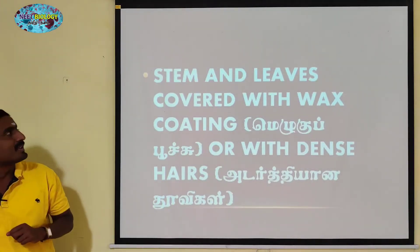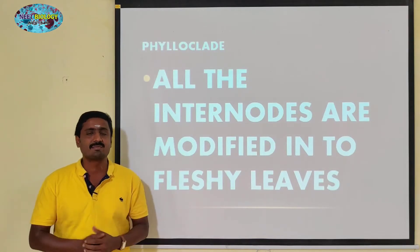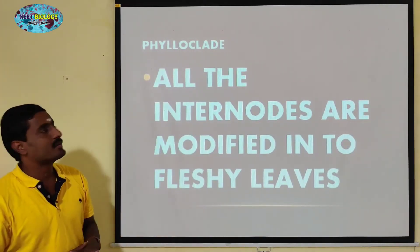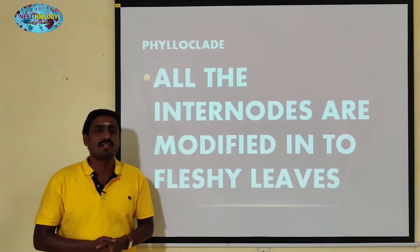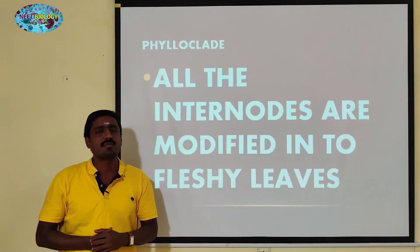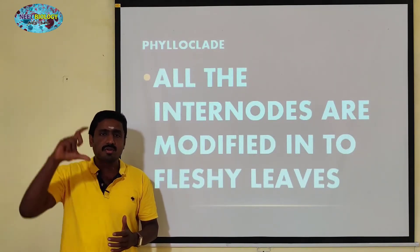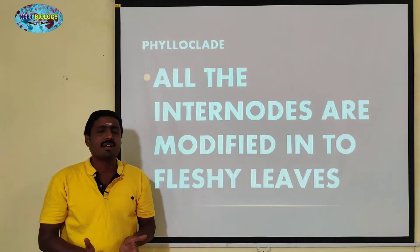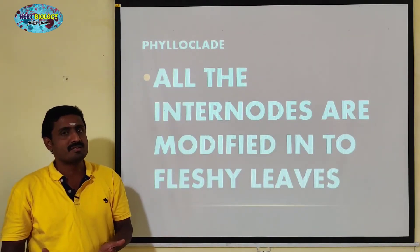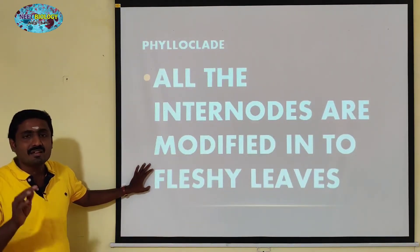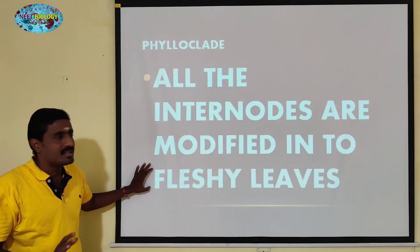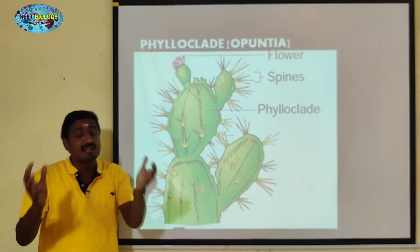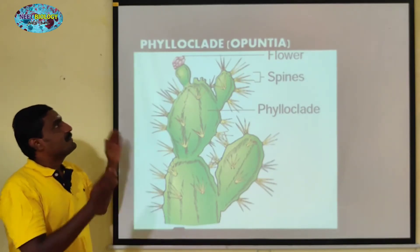This is a phylloclad, clad, and phyllode — here are three things. First, phylloclad: all the internodes are modified into a fleshy leaf-like structure. There is a stem, there is a leaf above it, the leaf is at the node. If there is an internode, it is an internode. All the internodes are modified into leaves in a phylloclad.